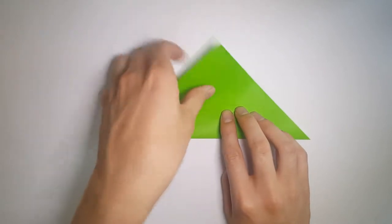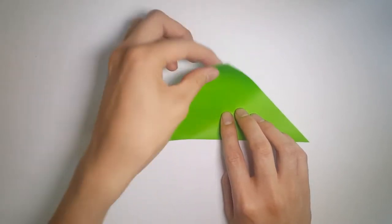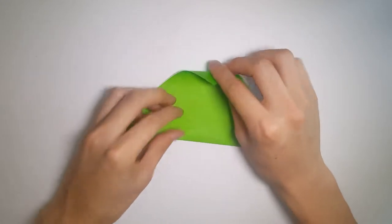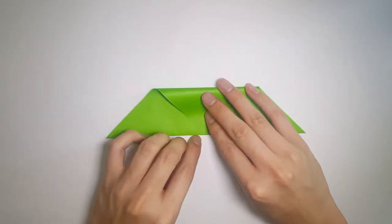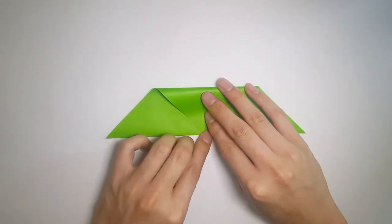After that, we're going to take the top corner and fold it down to meet the bottom piece of the paper. This will give us an indication of where the halfway line is, so just make two small creases on the sides.